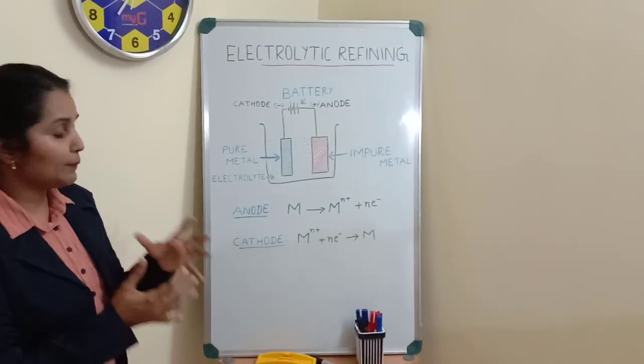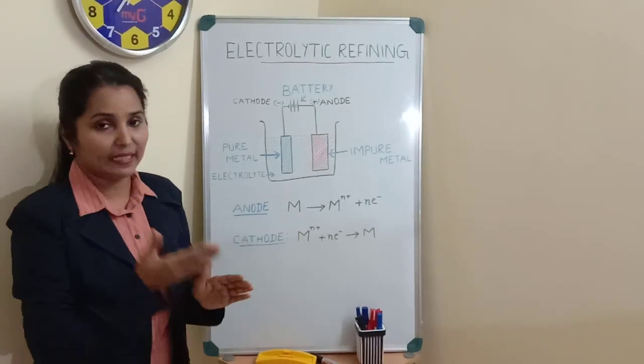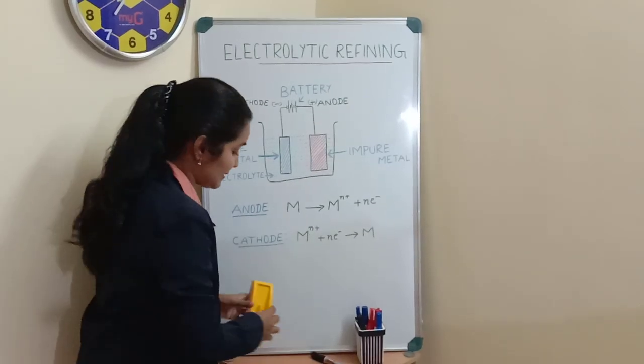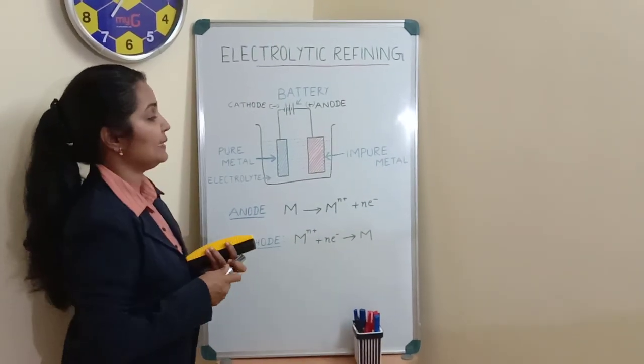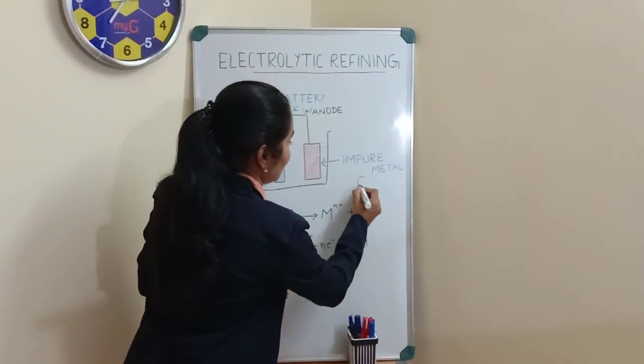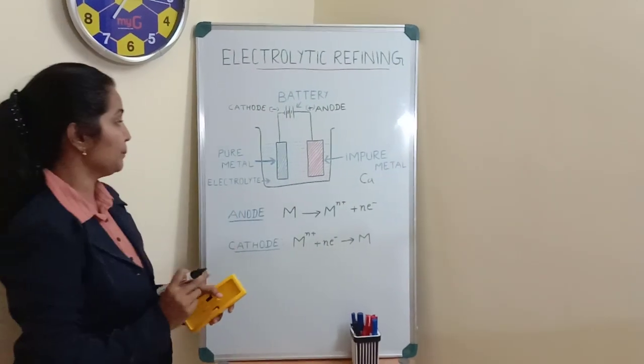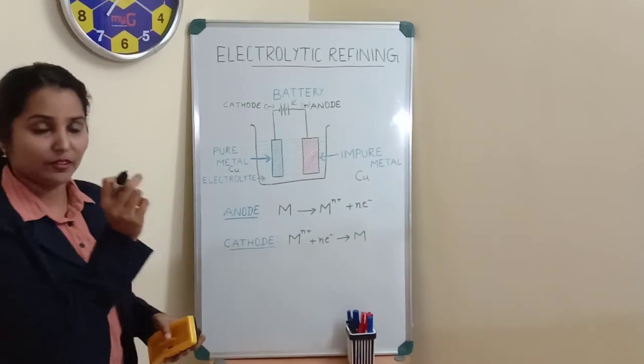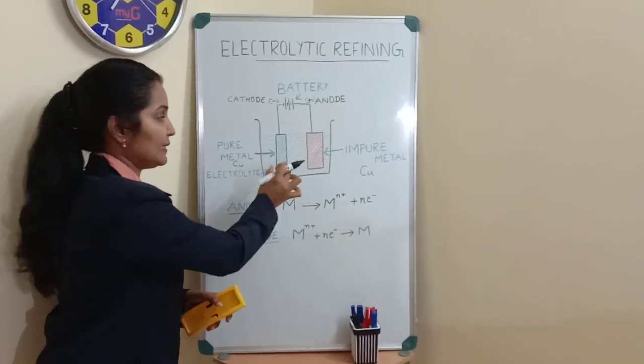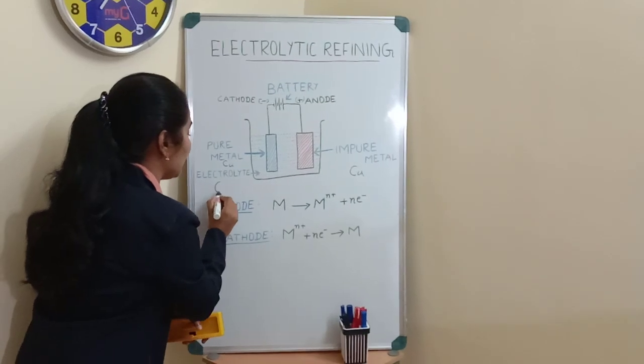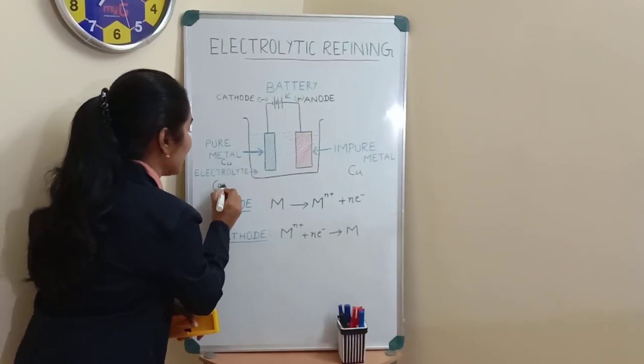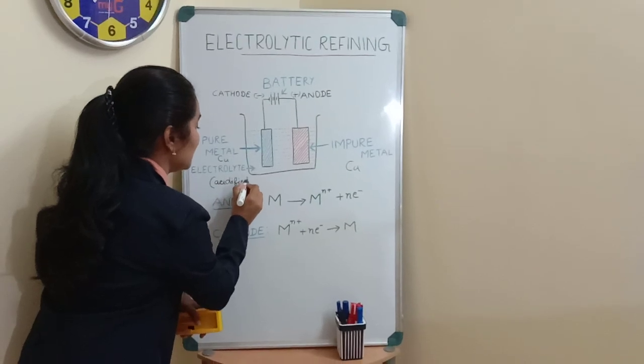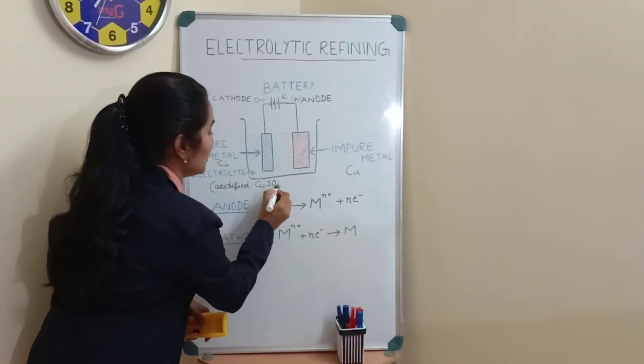When we take an example for this refining method, we take the example of copper. The impure metal here is copper. The impure copper we will take at anode, and here we will take the pure fine strip of copper metal as cathode. As electrolyte, it will be acidified copper sulfate solution.